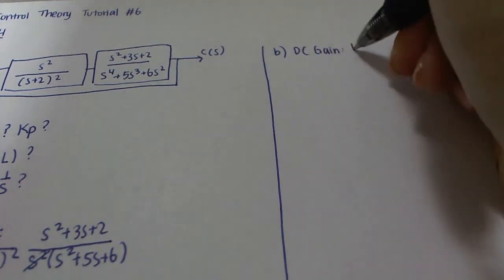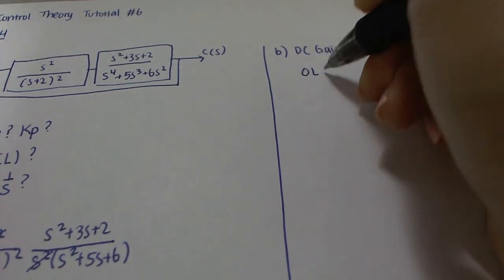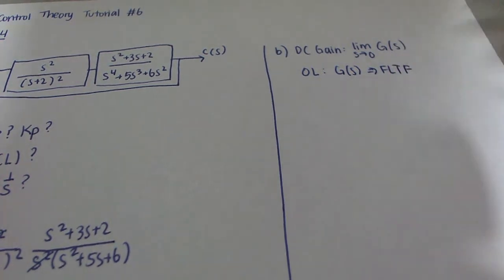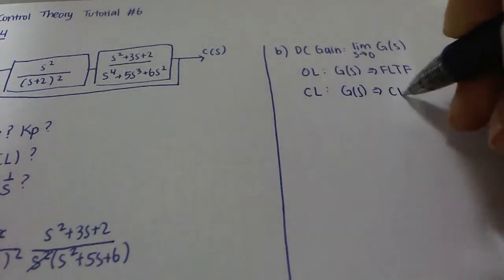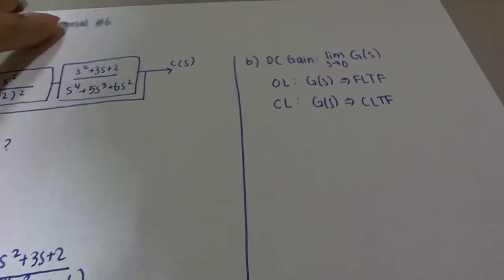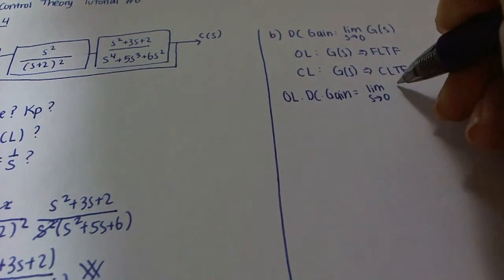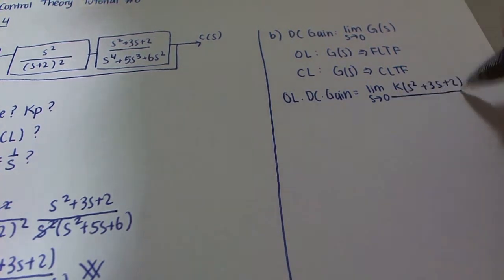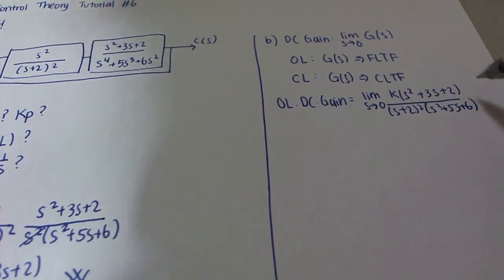Moving on to the next part: what is the open loop and closed loop DC gain? The formula for DC gain is the limit of G(s) as s tends to 0. For the open loop DC gain, G(s) is the forward loop transfer function. We know this is essentially the same as the static position error constant, so solving the limit gives us k over 12.